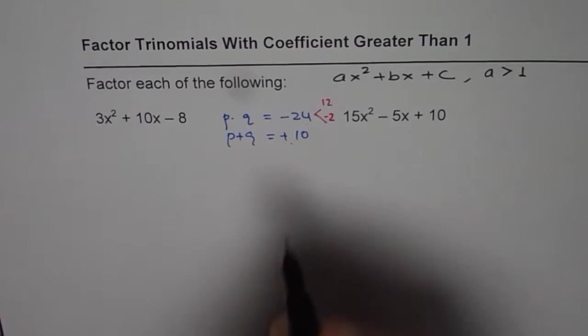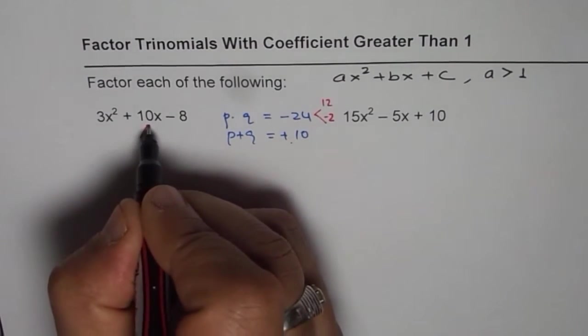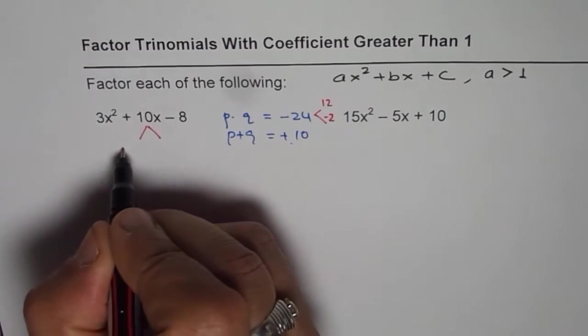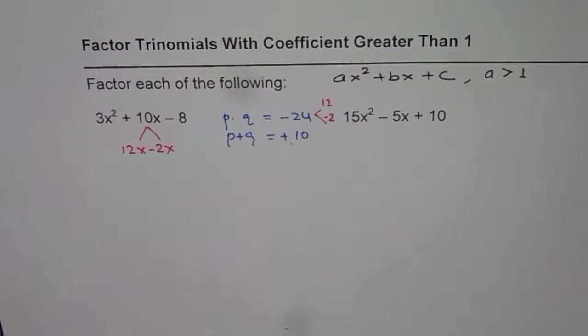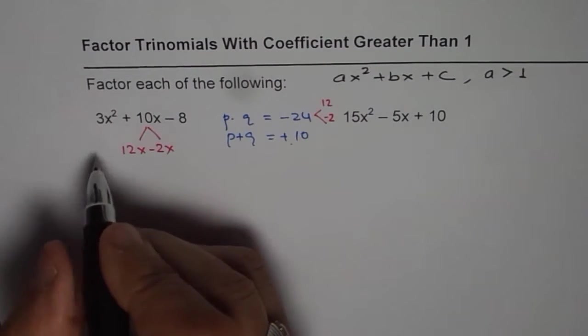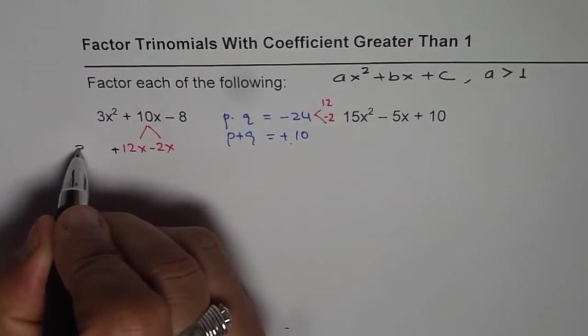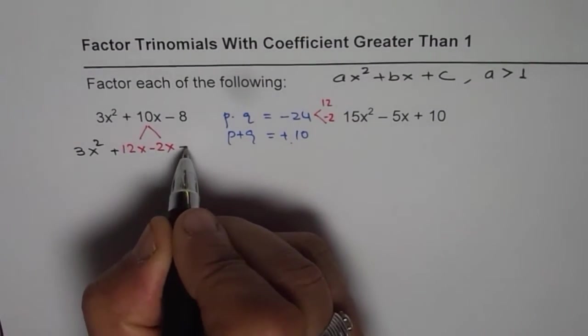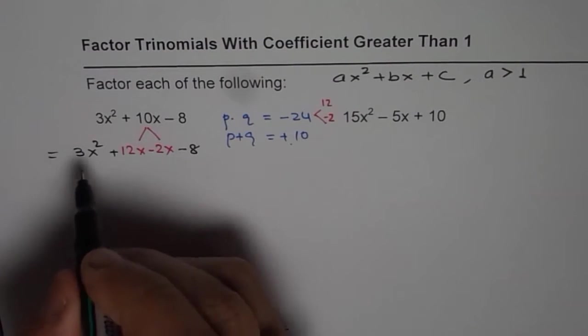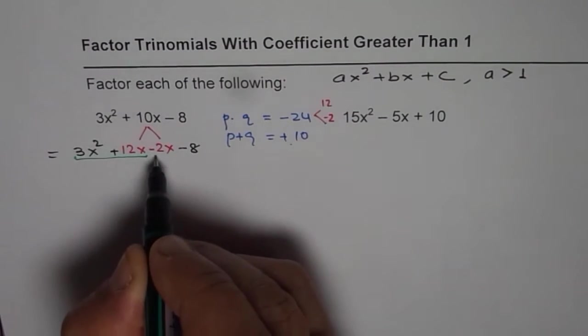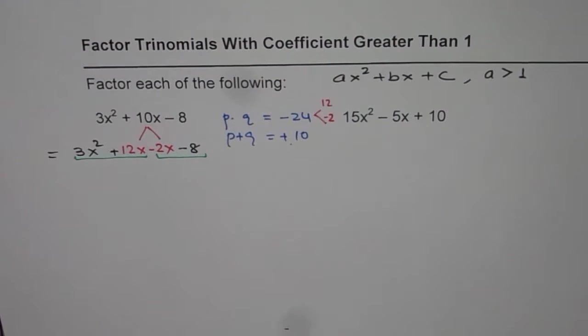Now what we do here is basically we split this 10 and write this as 12x - 2x. Rest all remains the same. So let us continue. So rest all is 3x² here and -8, we have the same trinomial. Now the next step is we will club two two terms. The first two terms and the last two terms.